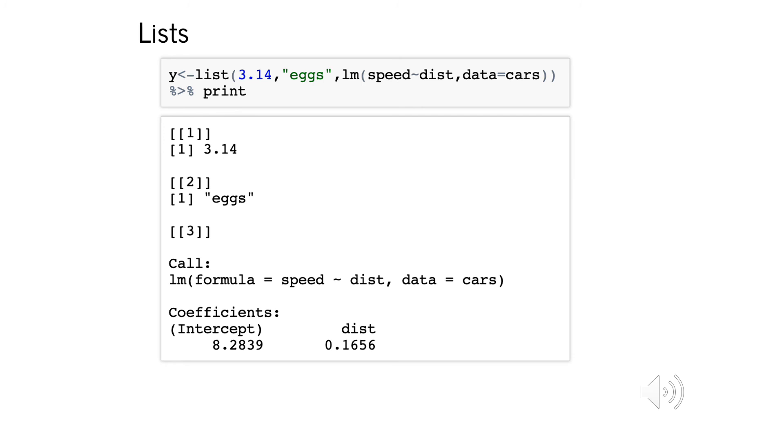In order to understand how we're storing the data in this example, we're going to make use of the concept of lists. In R, this is a way of organizing together data that is not necessarily of the same type. In this example, I create a list called y, in which I put three items. The first is the number 3.14, the second is the word eggs, and the third is a linear model that relates the speed and distance of different cars.